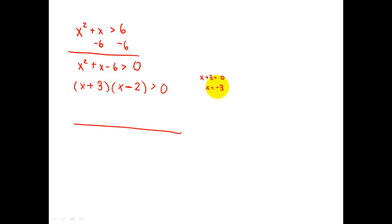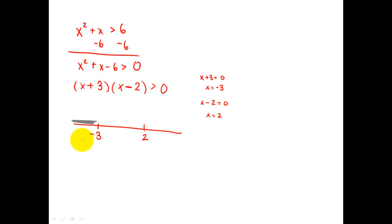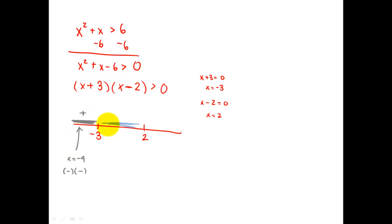I stick negative three on the number line. Then x minus two equals zero, so x equals two — also on the number line. Now I have only three regions. Let's do the gray region first: choose a number less than negative three, like negative four. Looking at the factored equation: negative four plus three is a negative number, and negative four minus two is also a negative number. A negative times a negative is a positive — so that region is positive.